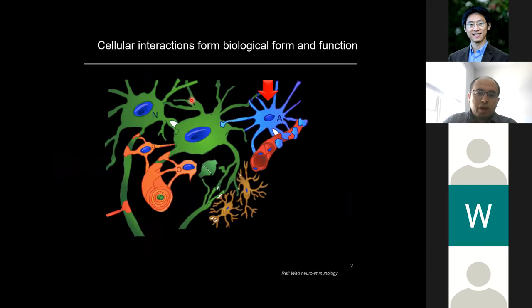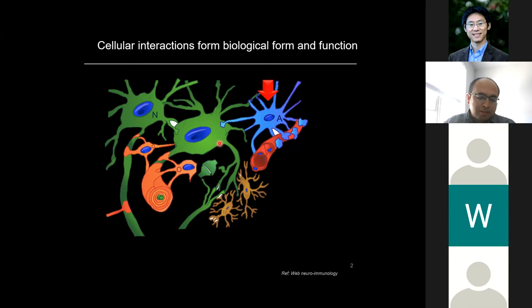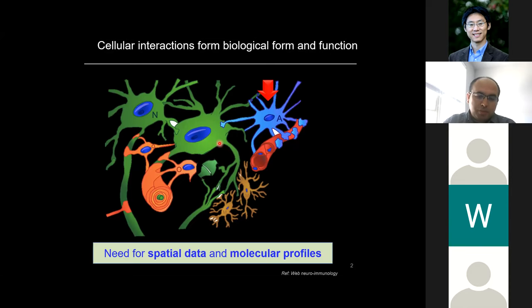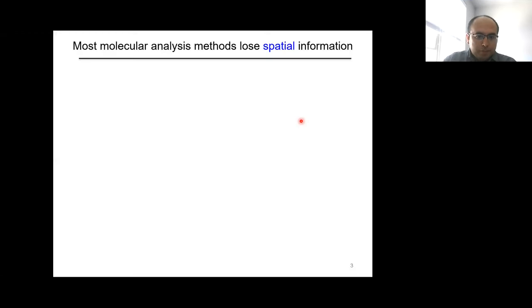Why are we interested in spatial context? Cells communicate with each other to properly function in a human body. For instance, there's an example of a multicellular system where M and A cells send messages to neurons to fight infections. To study this complexity, we need spatial data and molecular profiles of these systems.